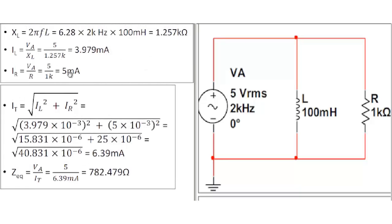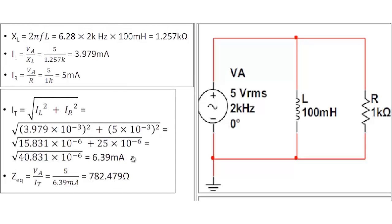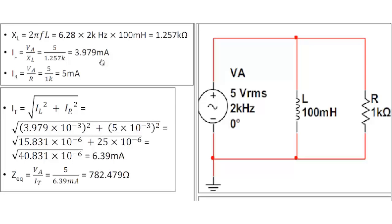What you have to do is take the individual currents and apply the Pythagorean theorem. The 5 milliamps and 3.979 milliamps are the two sides of a right triangle, and the hypotenuse is the total current. Plugging those values in, you end up with 6.39 milliamps RMS — which is actually less than simply adding the two currents together. That's an interesting aspect of electronics.